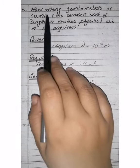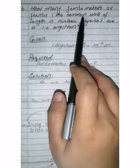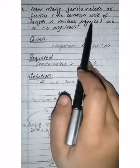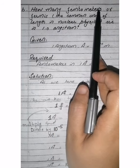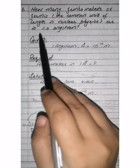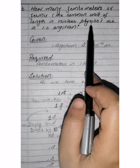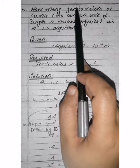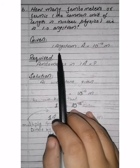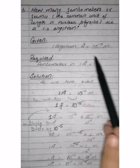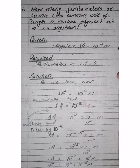Now look at Part B of question number 2: how many femtometers (or fermis — the common unit of length in nuclear physics) are in one angstrom? Given: one angstrom is equal to 10 raised to the power of minus 10 meters. Required: how many femtometers are equal to one angstrom?